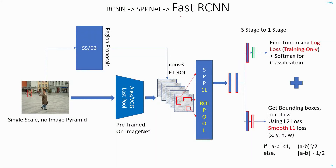So these are the changes done in Fast RCNN on top of the SPPNet architecture. In terms of accuracy, there is not much improvement: RCNN gives 66% accuracy while Fast RCNN gives 66.9%. However, though the improvement in accuracy is small, the improvement in processing time is huge.